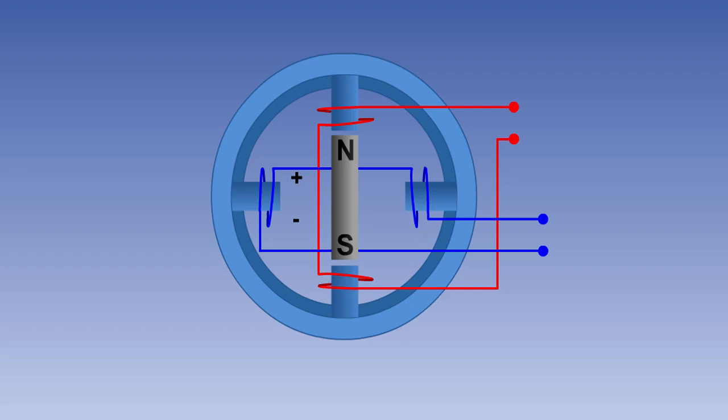Polyphase, or multiphase AC generators, have two or more sets of single-phase armature windings, commonly known as phases, symmetrically spaced around the stator.